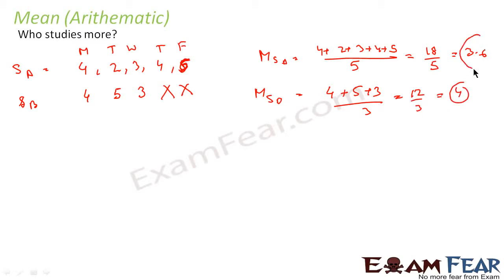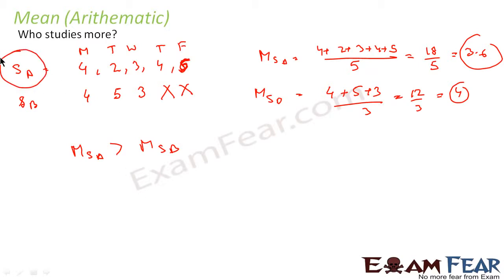We see that the mean of Student B is four, which is more than the mean of Student A, which is 3.6. So from this we can say that Student B studies more than Student A. It may not be perfectly correct since we don't have all the data, but from whatever data we have, we can conclude that Student B studies more.